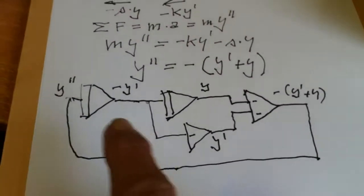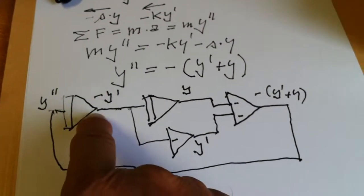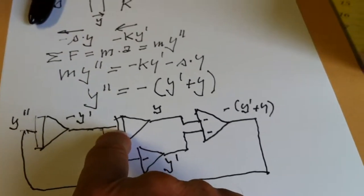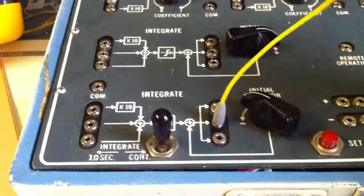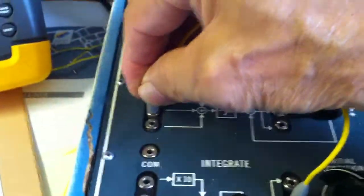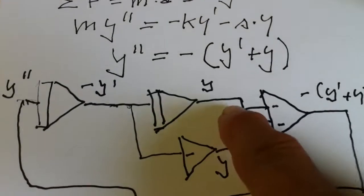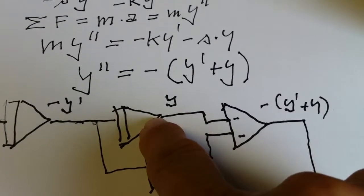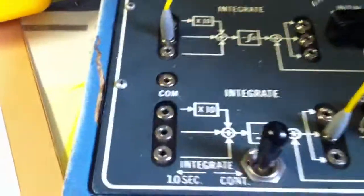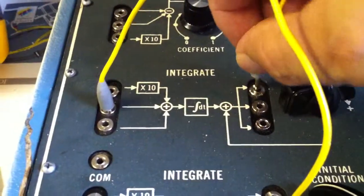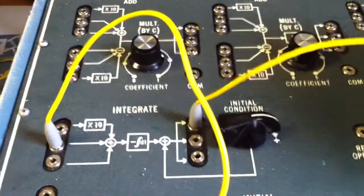Okay, let's start with the first integrator and tie the output of the first integrator to the input of the second one. This is the output of the first integrator and this is the input of the second one. Let's tie the output of the second integrator to the input of an adder. So, this is the output of the second integrator and we will take this adder here.